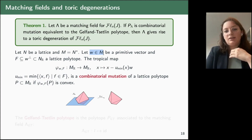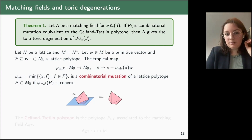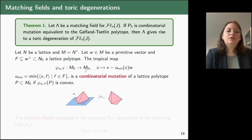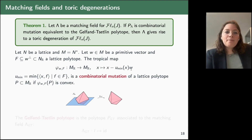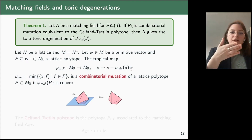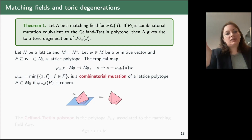A combinatorial mutation is defined in the lattice M where we have our polytope P_λ. We fix a primitive vector in the lattice and an orthogonal lattice polytope in the dual lattice. From this data we define a tropical map sending points to a quantity involving the minimum scalar product times our primitive vector w. We say this tropical map defines a combinatorial mutation of a lattice polytope P if the image of the polytope is convex.